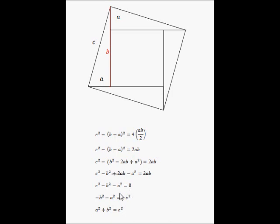Which very simply rearranges to the theorem that we're trying to prove: a squared plus b squared is equal to c squared.